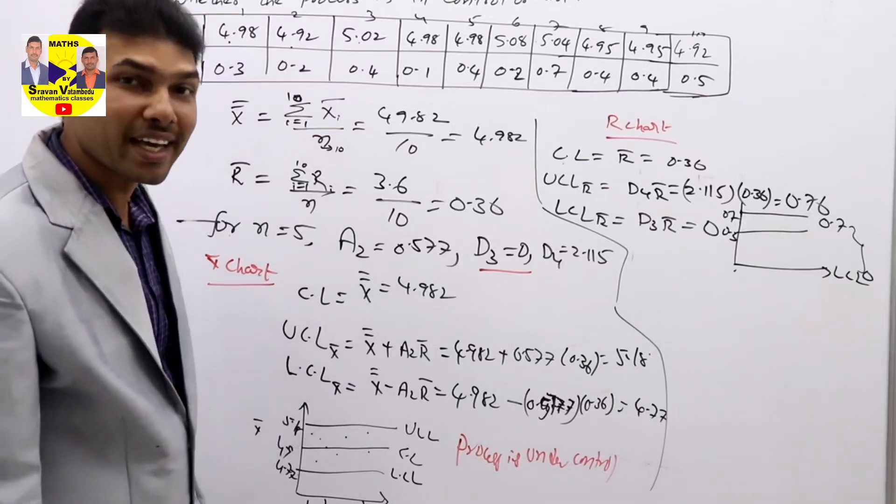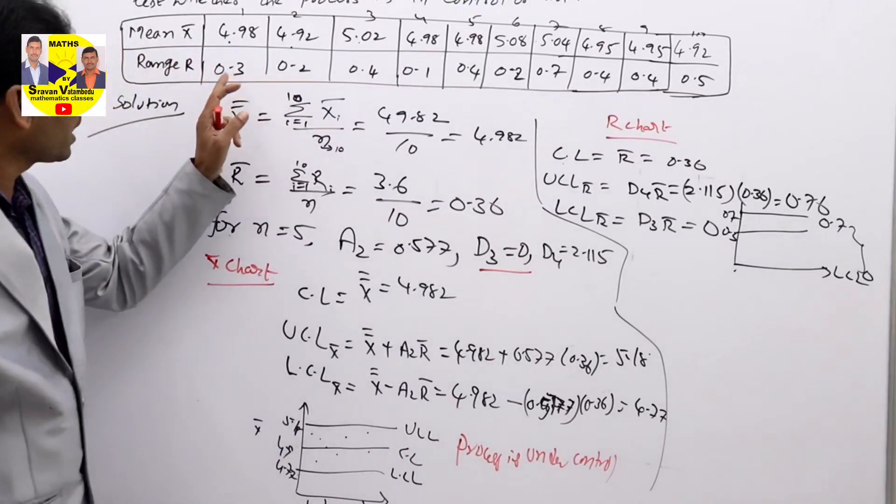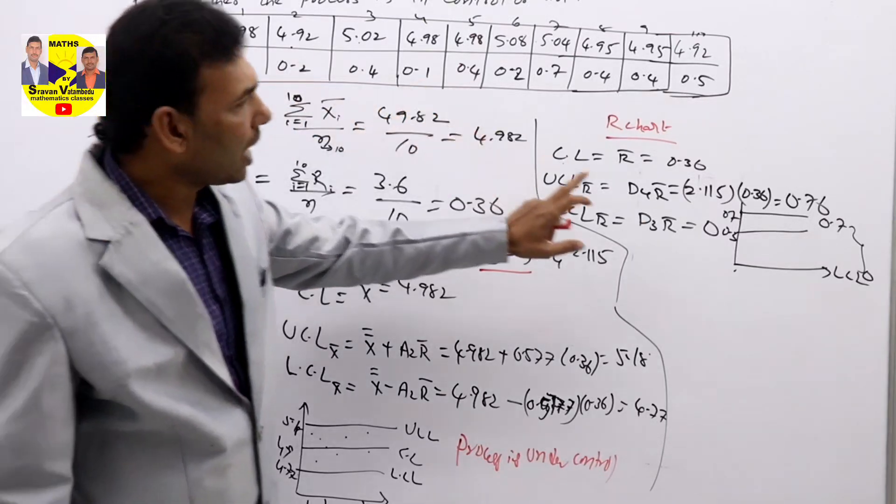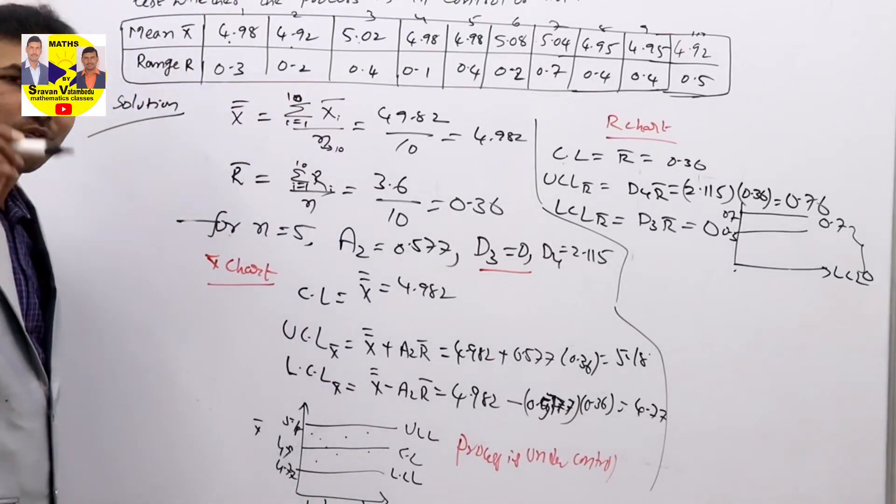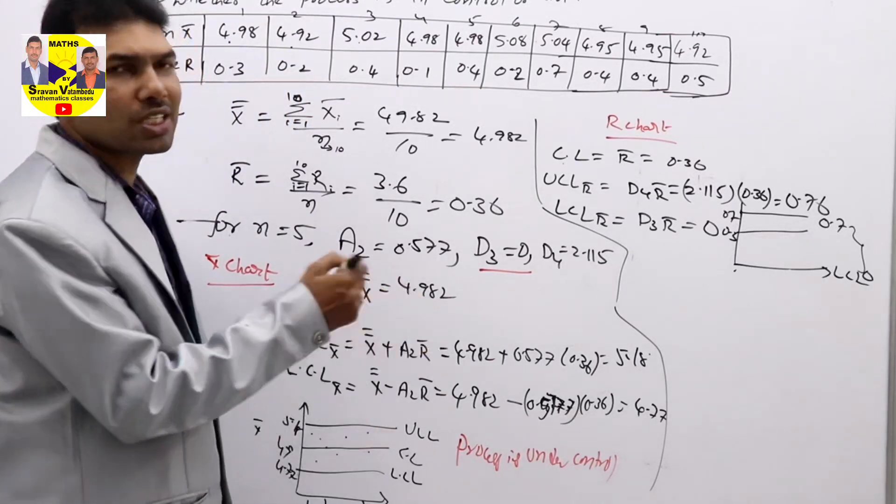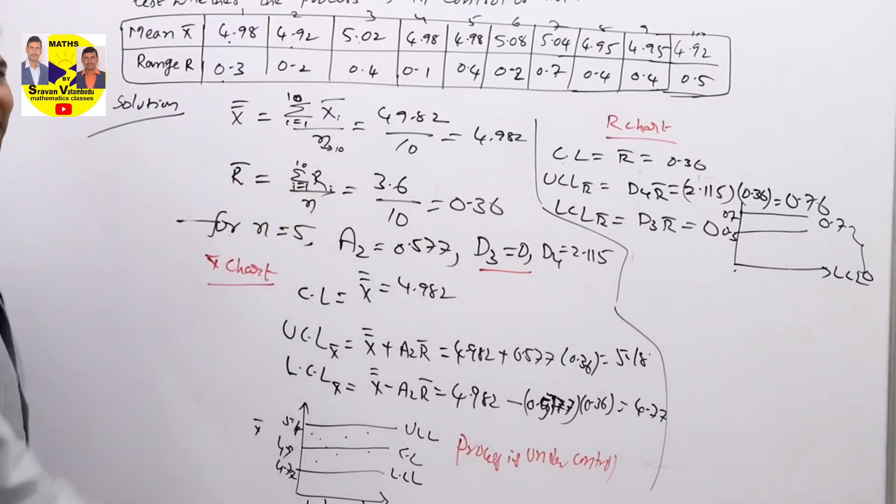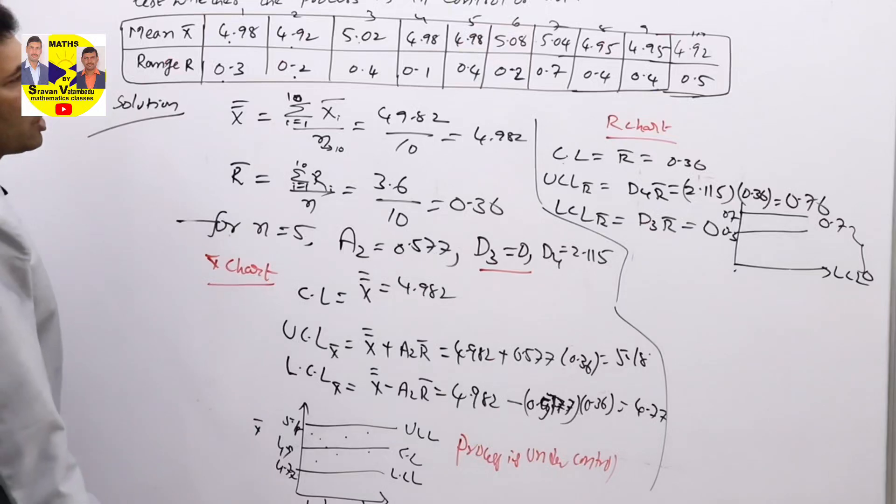See, in range, check every value—they are in between 0 and 0.7. If any one value crosses 0.7, then process is out of control. If you want, you can check: 0.3 in between 0 and 0.7, 0.2 in between 0 and 0.7, 0.4, 0.1, 0.4, 0.2, 0.7 also on the line...